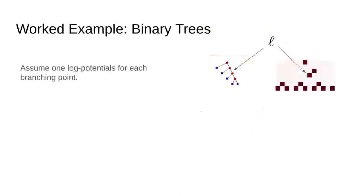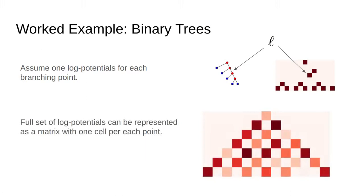Let's look at a concrete example. We'll take the classic problem of computing a distribution of binary trees over a fixed-length sequence. There are an exponential number of these trees, but we would like to utilize this distribution without enumerating it. To do so, we first specify a log potential for each part — here representing a split in the tree over a given segment of input. We represent these as a matrix of brown squares on the right, where each square represents a given split. We then produce a matrix with a log potential for every possible split, using this relatively small matrix to specify a distribution over an exponential number of trees.